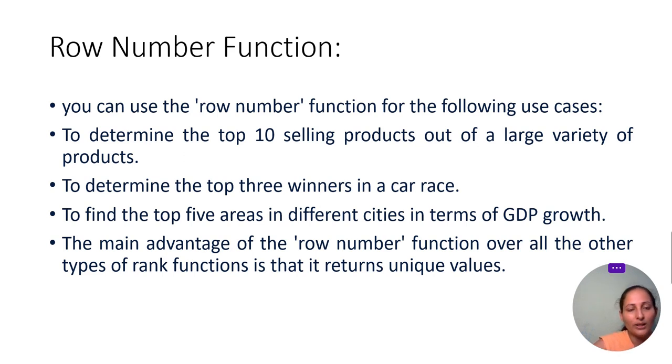Like in rank, if two values have the same rank, it will allot one, one, and then three. In dense rank, the difference is one, one, one, two. If you see top three, it will give four rows. This is the main disadvantage here.